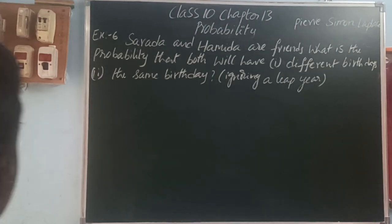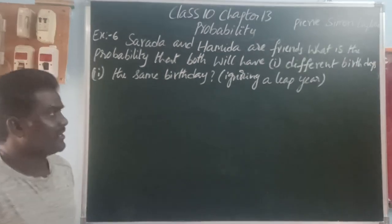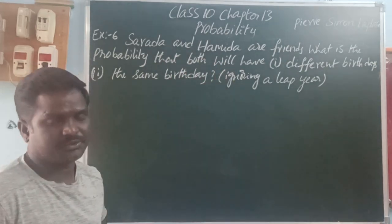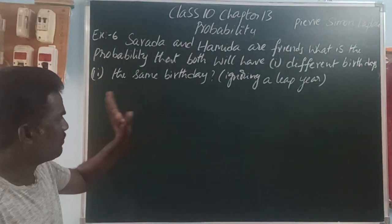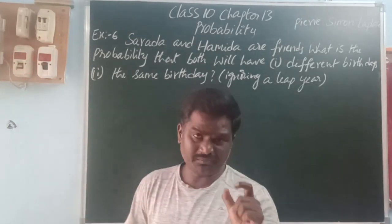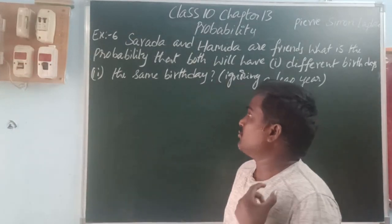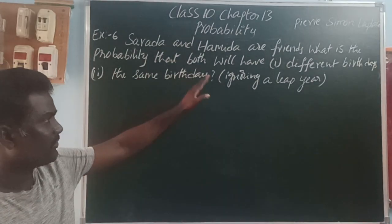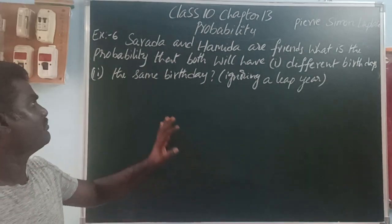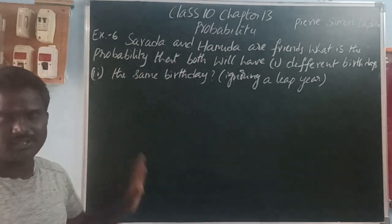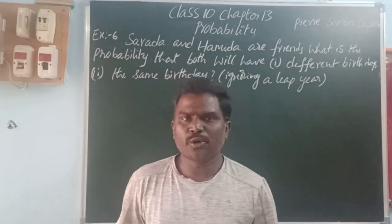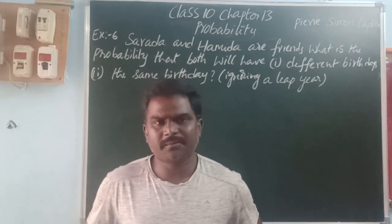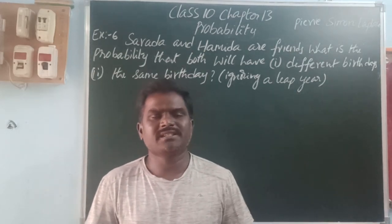Next, Example 6. Sardah and Hamidha are friends. What is the probability that both will have different birthdays and both will have the same birthdays? In a year, how many days are there? 365 days — that is a non-leap year. A leap year means 366 days.